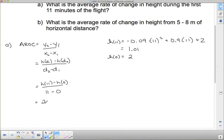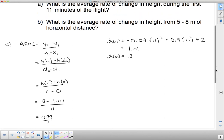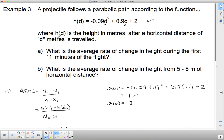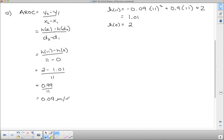And 2 minus 1.01 is 0.99 divided by 11 is 0.09. Now this is in, and you've got to be careful with this. This is going to sound kind of weird because both of these things are measured in meters. Meters and meters. So this is going to be in meters per meter, which sounds kind of weird.